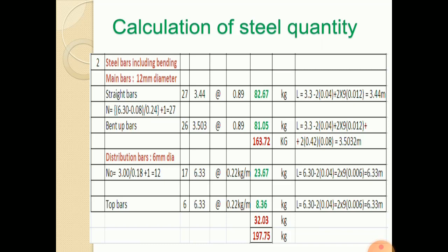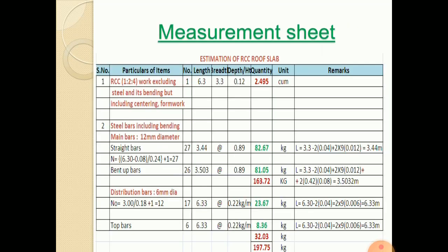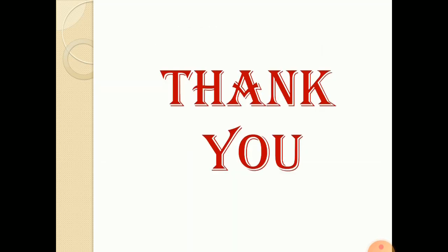If you take top bars also, that is when the main bar is bent up, top bars, 3 on each side, that is 6 bars of 6.33, it will be 8.36. Total quantity of steel will be 197.75 kg. This is the total measurement sheet of 2 items, one is concrete, and other is steel. Thank you.